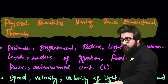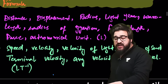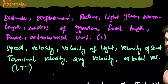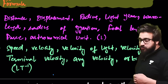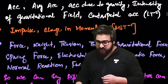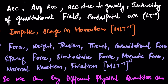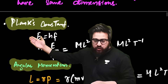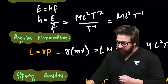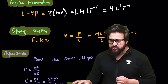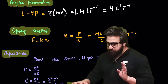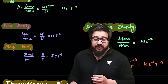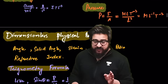Some quantities have the same dimensions — for example, displacement and distance both have dimensions of length. Take a screenshot of the table shown. Similarly, Planck's constant, angular momentum, spring constant, energy density, mass density, and charge density — their dimensions are all listed here. A PDF will also be shared.